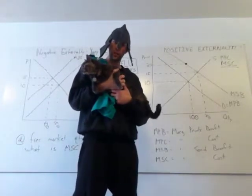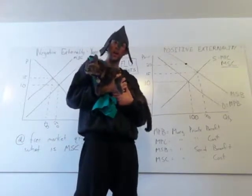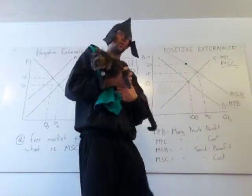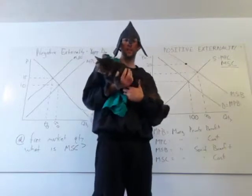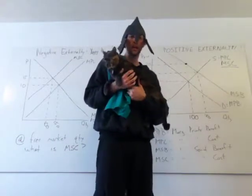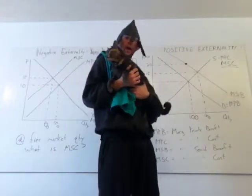So, any time we have inefficiency, we have this other thing. Think about when we did price ceilings and price floors. Think about when we imposed taxes on things. What did we get that kind of showed us on the graph that we had inefficiencies?